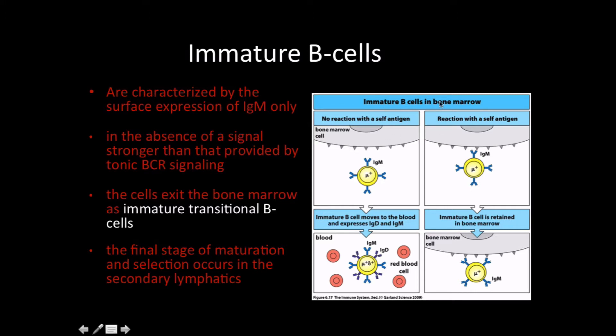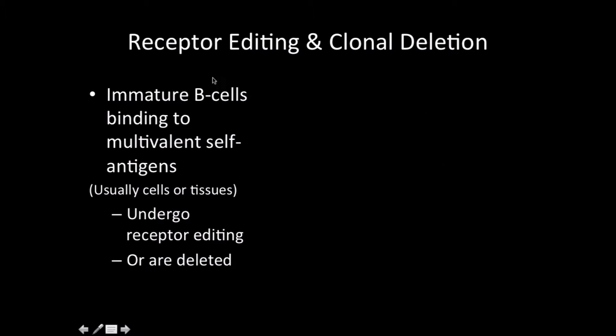Here we see an immature B-cell in the bone marrow. If it has no reaction with self-antigen, it moves to the blood and starts to express IgD and IgM. If it reacts with self-antigen, which is not something we want, it's retained in the bone marrow, hopefully saved by one of those mechanisms. But if not, it ends up getting killed or inactivated. Two mechanisms for saving these B-cells are receptor editing and clonal deletion.